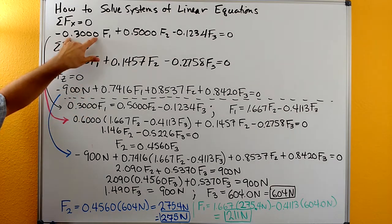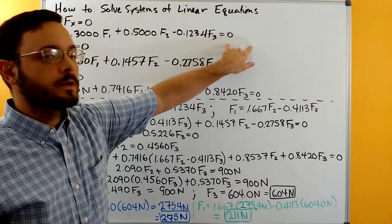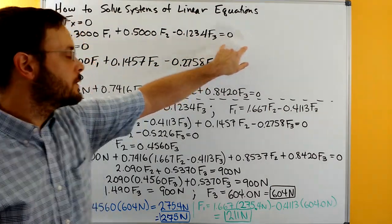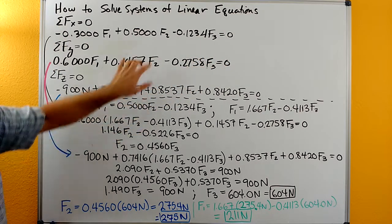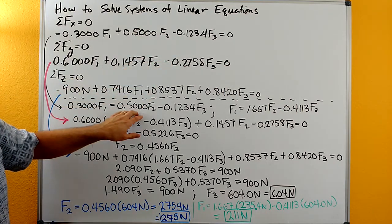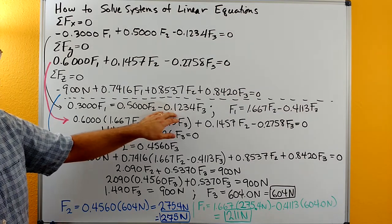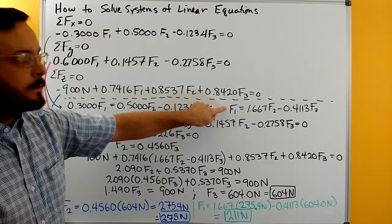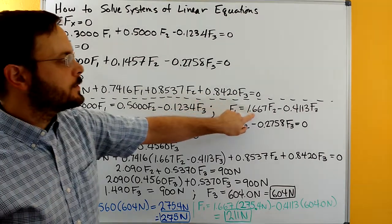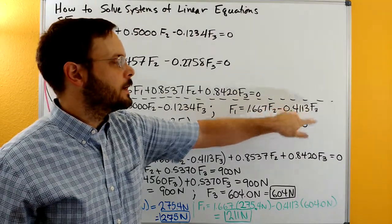We take the negative 0.3 f1 term and add it to both sides of the equation, bringing the 0.3 f1 over. So 0.3 f1 is equal to 0.5 f2 plus 0.1234 f3. We then divide through by 0.3, and doing the math that gives us f1 is equal to 1.667 f2 minus 1.4113 f3.